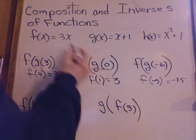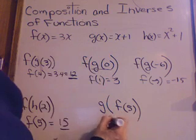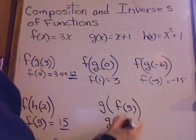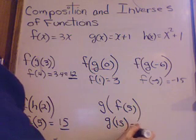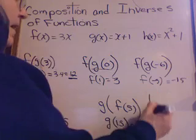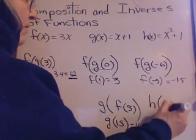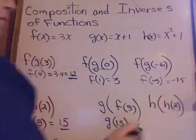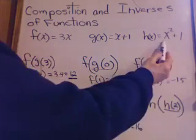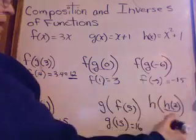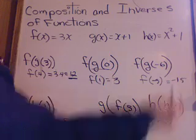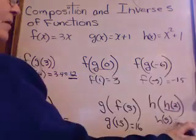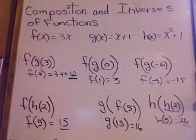f of 5, 3 times 5 is 15. Plug that in. Now, I have g of 15. Where do I go? Go here. 15 plus 1 is 16. What if I have h of h of 2? Go to the h equation. Put in 2. 2 squared plus 1 is 5. So, now I have h of 5. Go to the h equation. Put in 5. 5 squared is 25 plus 1 is 26. You can do these. That's composition of functions.